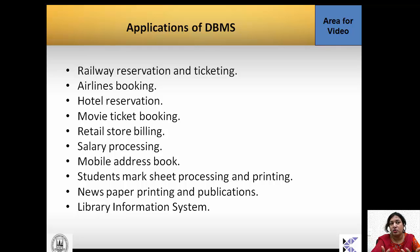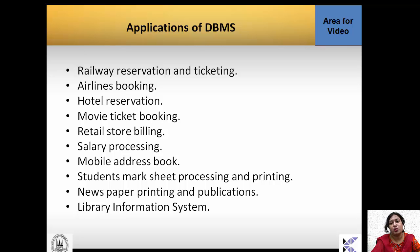Newspaper printing and publications — news websites change dynamically and newspapers are updated daily with various columns; records are maintained through DBMS. Another application is the library information system — whenever you go to a library, issue a book, the data is captured by the database, and when you return the book, it is registered again. If a student doesn't return the book within the stipulated period, a penalty is applied and the librarian knows which book is missing and who has it.